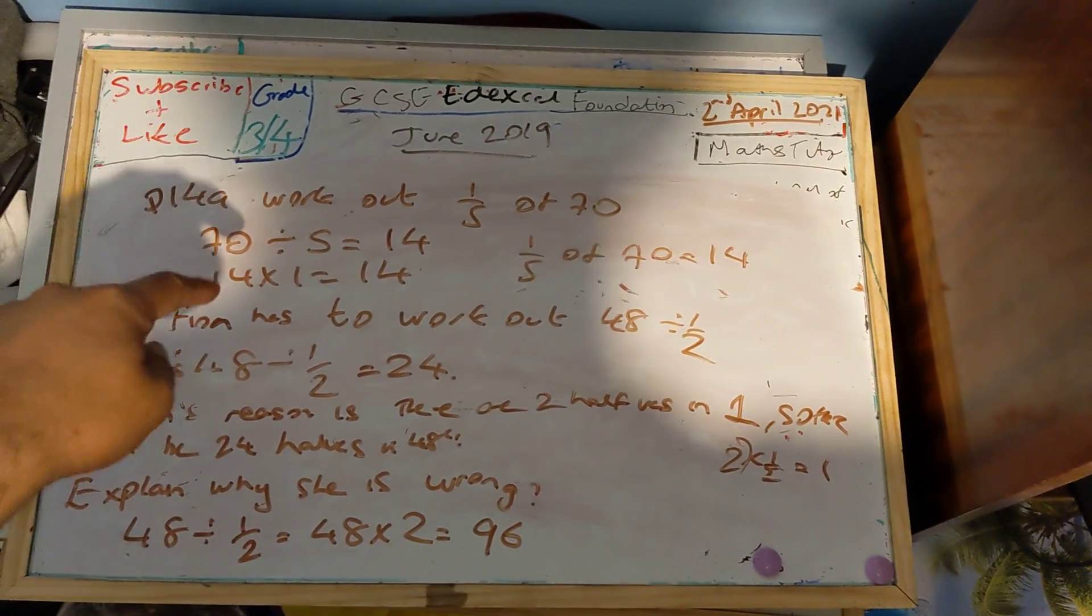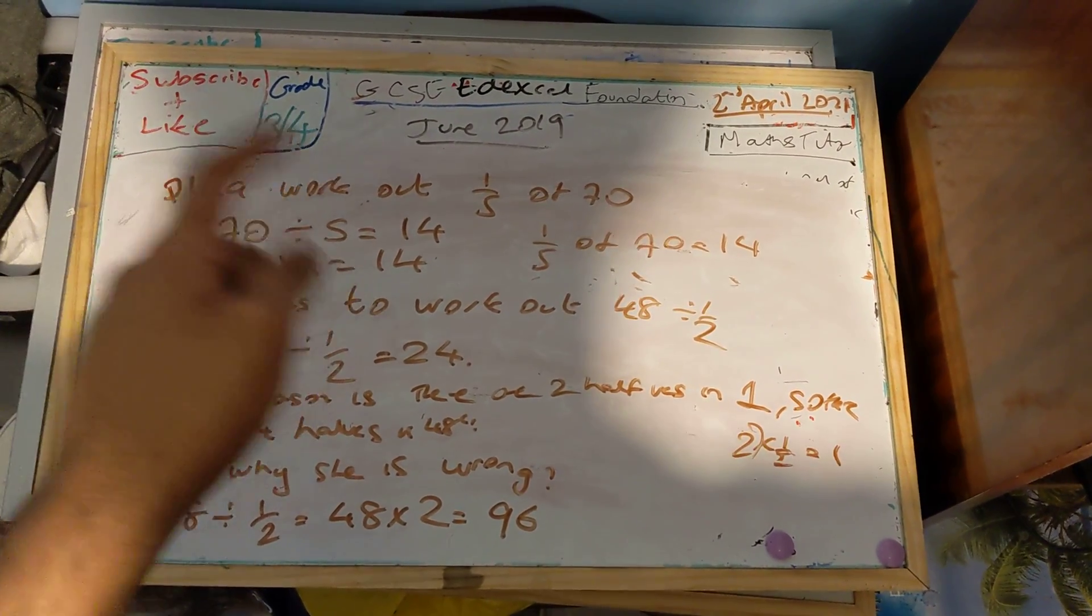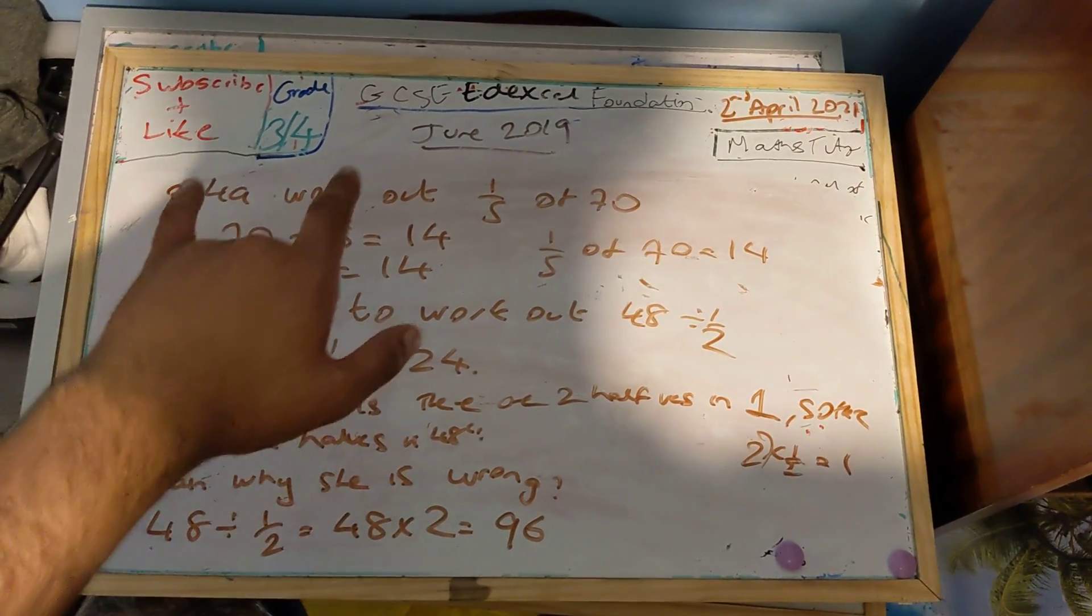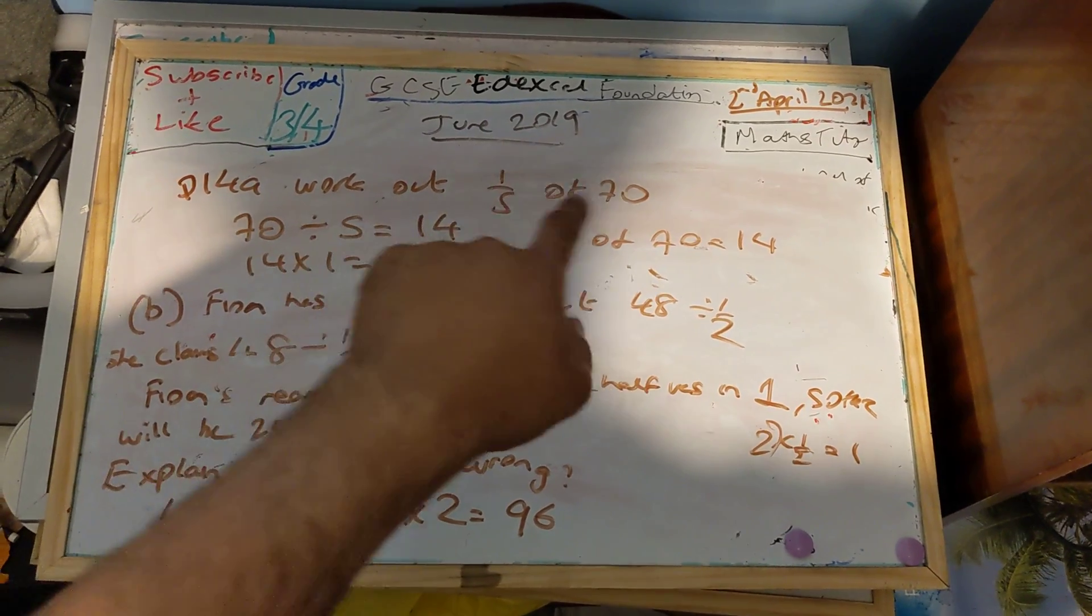Question 14a, part a. I've done it in the previous video actually but I'll do it again just to refresh your memory. 14a says work out a fifth of 70.